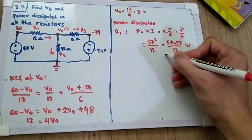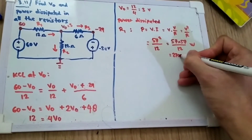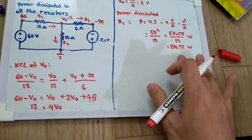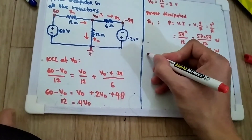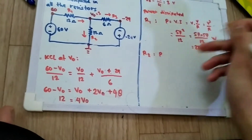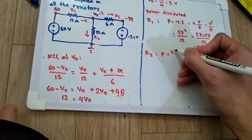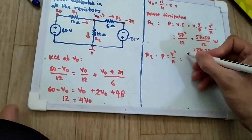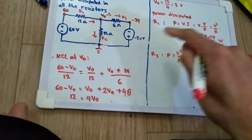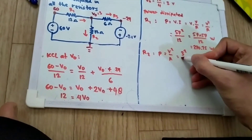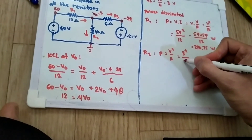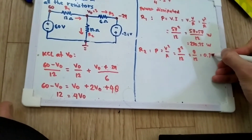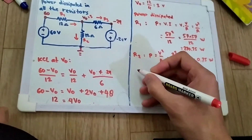For R2, using the same formula V squared over R, the voltage is V0, which is 3V. The difference is 3 minus 0, so P_R2 equals 3 squared divided by 12, which is 9 over 12. That equals 0.75 watts.